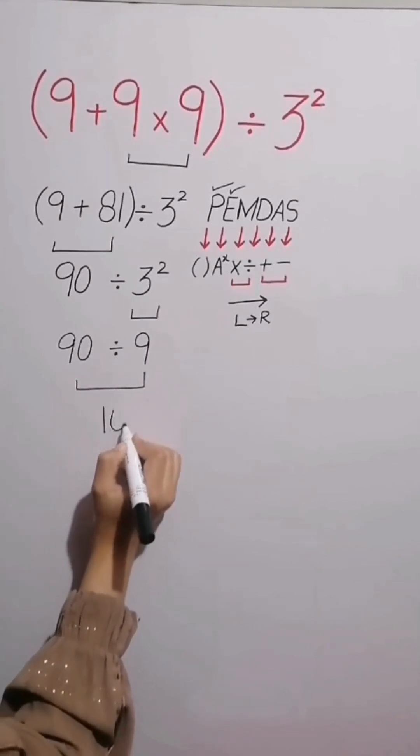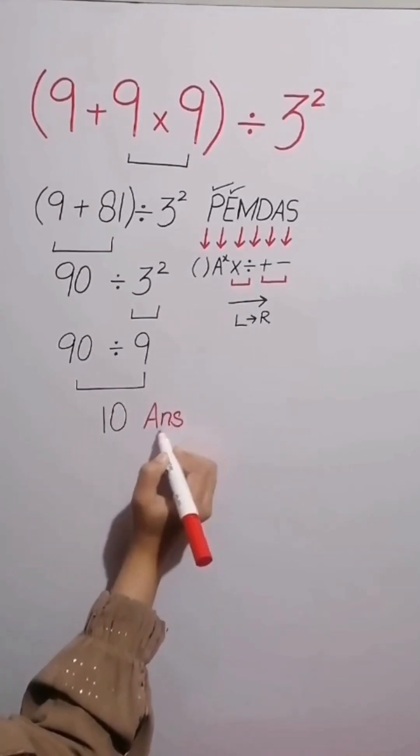Finally, 90 divided by 9 equals 10. And this is the final answer to this problem.